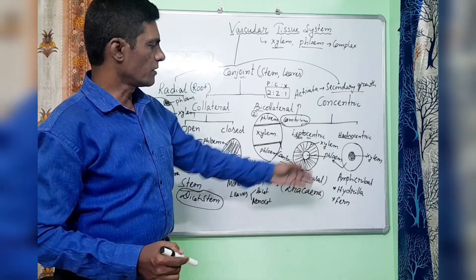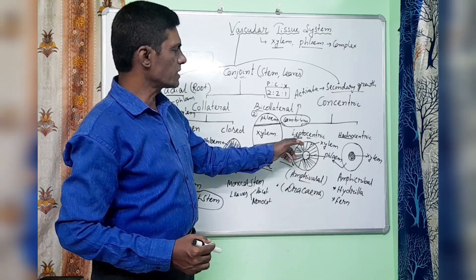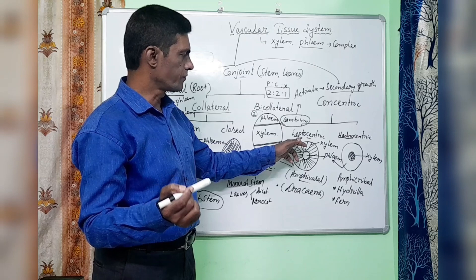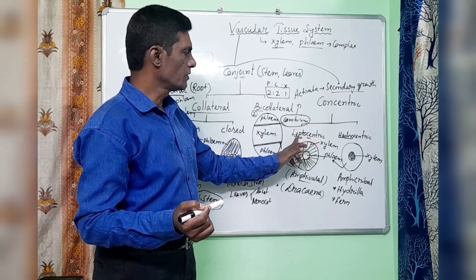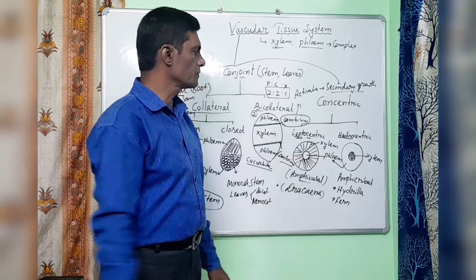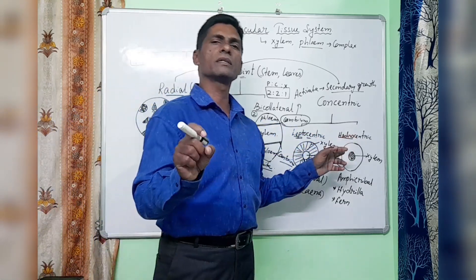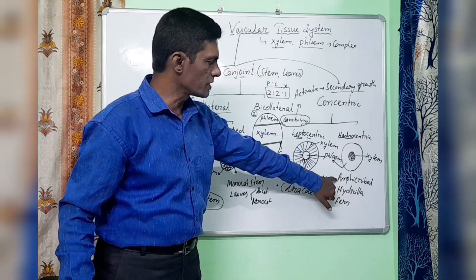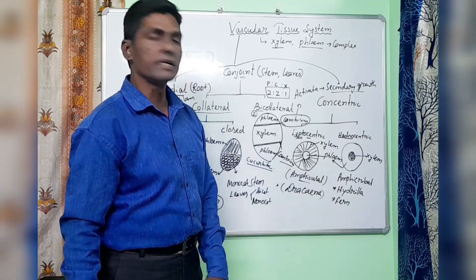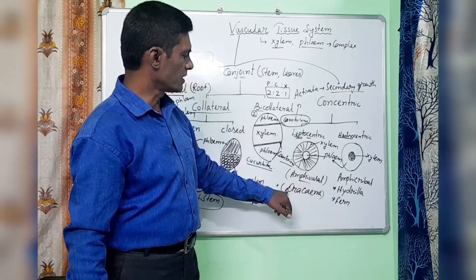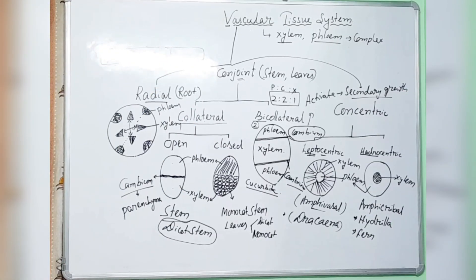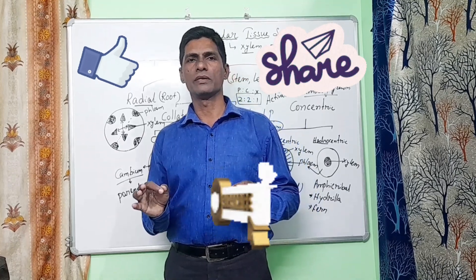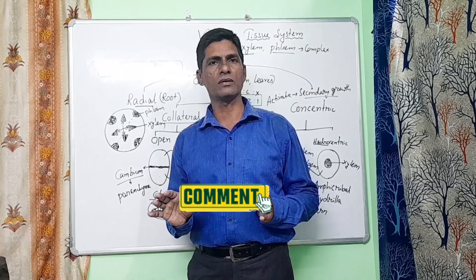For concentric type, there are two forms. Lepto means phloem — leptocentric means phloem is at the center, surrounded by xylem tissue. Hydro means water — the water-conducting tissue is xylem — so hydrocentric means xylem is at the center and surrounded by phloem. Hydrocentric is also called amphicribal type — example is Hydrilla and fern. Amphibasal (leptocentric) example is Dracaena. Please like, share, and subscribe to the channel. Any doubts, comment in the comment box.